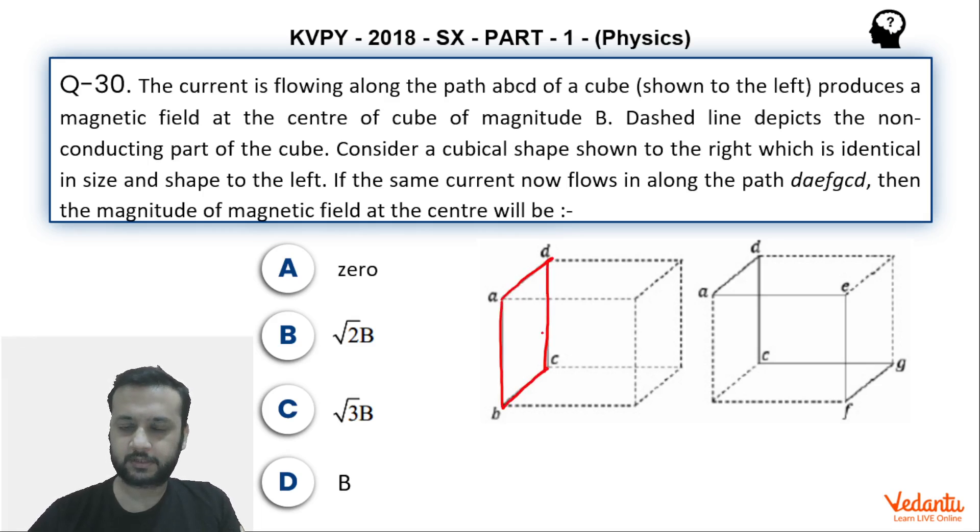It's given that let's assume the direction of the current to be in one particular direction. So I have assumed like looking from the right side, or any observer who looks from this side.